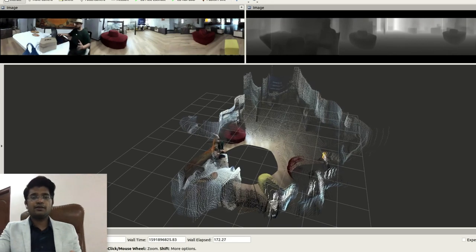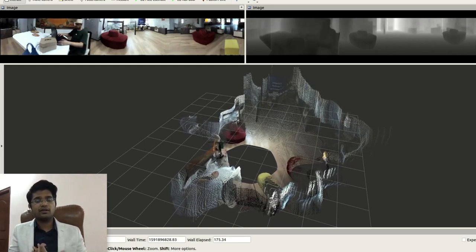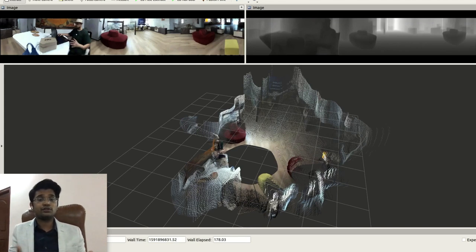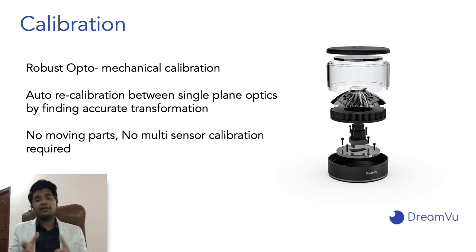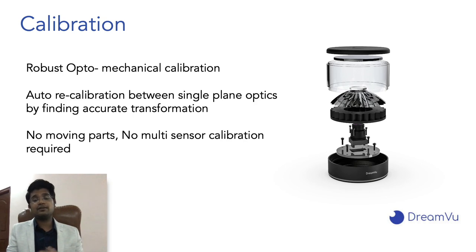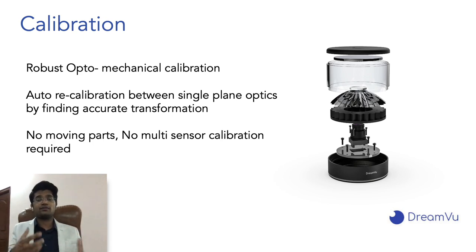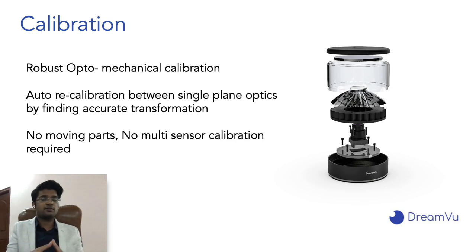Coming to the calibration aspect, we do very robust optomechanical calibration because even a slight movement in the optics can create issues in the final images. We have been testing these cameras for two years now with no problems. If there is any issue, recalibration can be done from the factory calibration because we have a single rigid body mirror — you just need to find the accurate transformation between the two images to detect any change in resolution or calibration.